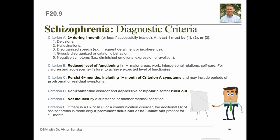Criterion F states that if there is a history of autism spectrum disorder or a communication disorder that began in childhood, the additional diagnosis of schizophrenia is made only if prominent delusions or hallucinations, in addition to the other required symptoms of schizophrenia, are also present for at least one month.